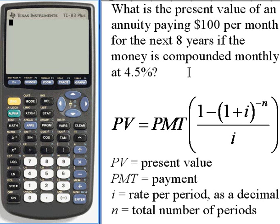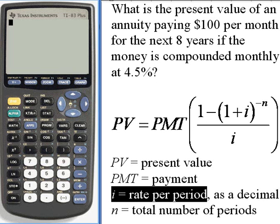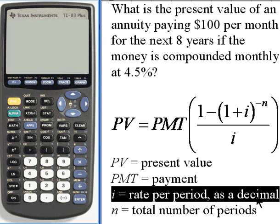We have a formula for doing it, the present value formula. The formula says that the present value, this is the amount of money you would be depositing, is equal to the payment, that's how much money you're going to take out every month, multiplied by 1 minus 1 plus i, and i is the rate per period as a decimal.